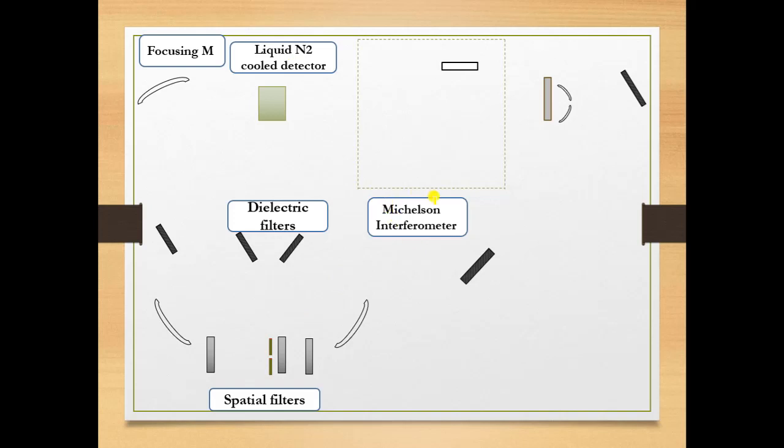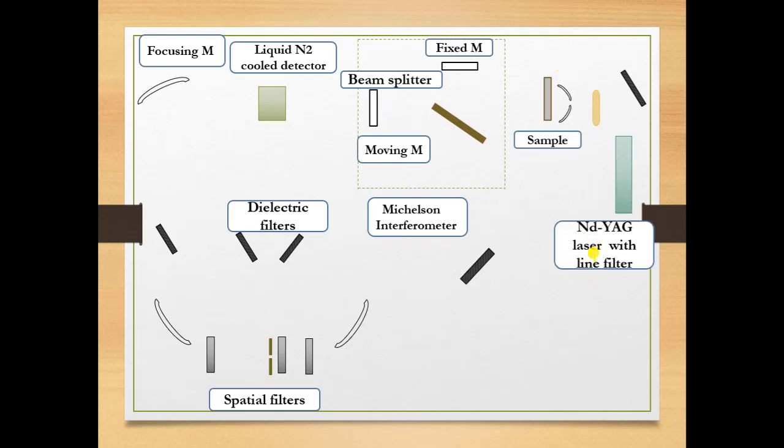This system is a Mickelson interferometer. In this system, we have the moving mirror, the fixed mirror, and the beam splitter. This is the sample. After that, we have a lens and then the laser.